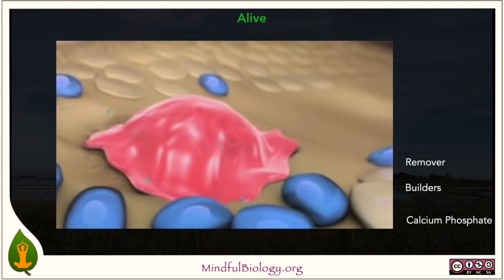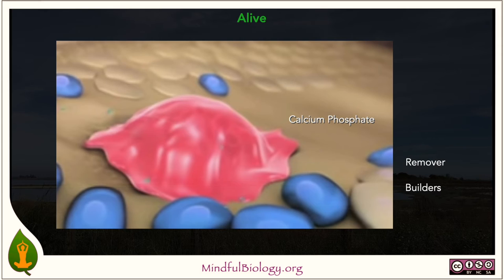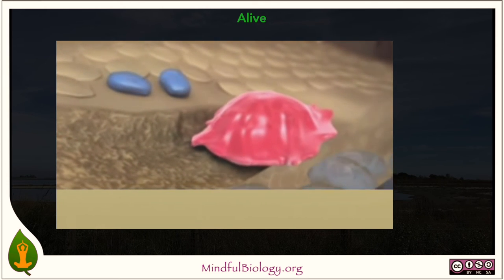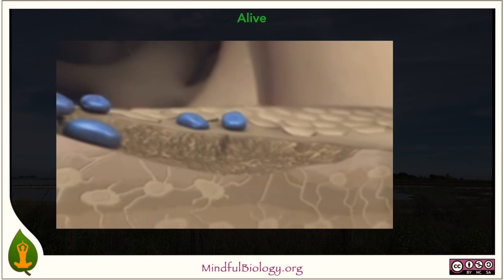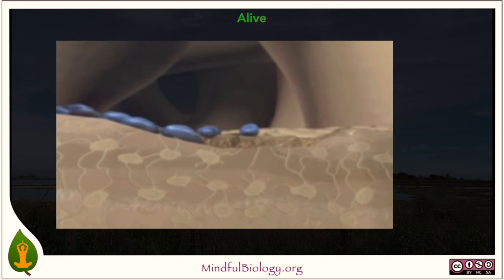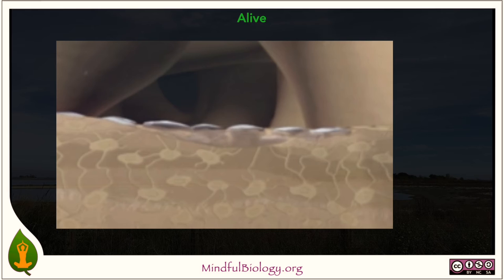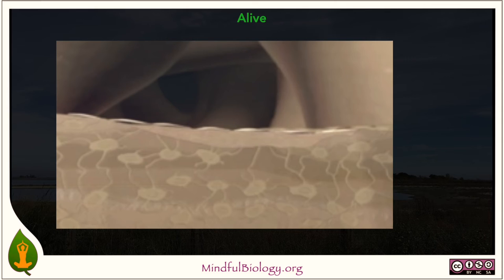We can use a simple animation to get a sense of how all this works. The calcium phosphate is the beige material, the building cells are the blue ones, and the remover is the much larger salmon-colored cell. The remover gouges out some of the bone and leaves an opening; then the builders come in and lay down more calcium phosphate, restoring and strengthening the bone. The balance between the removers and the builders is important to conditions like osteoporosis, and this animation was created by researchers looking for drugs that can alter that balance.